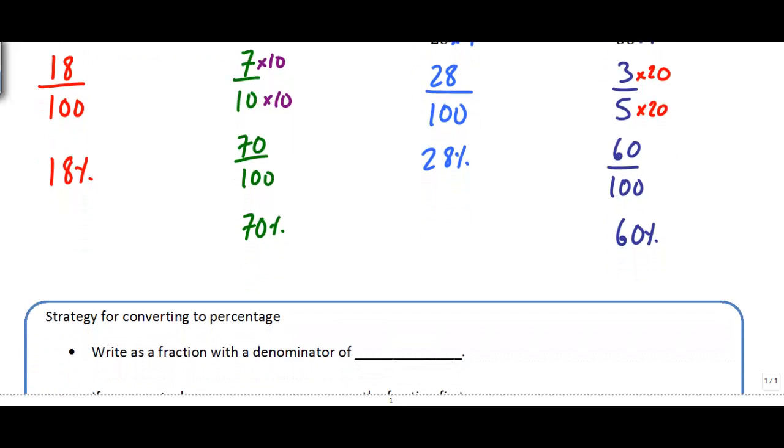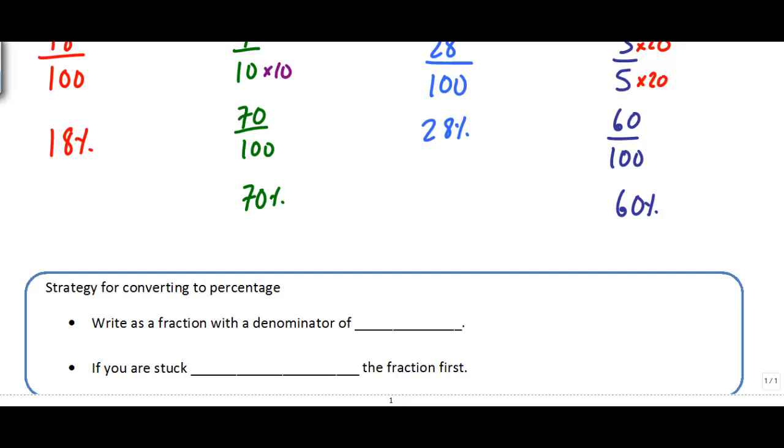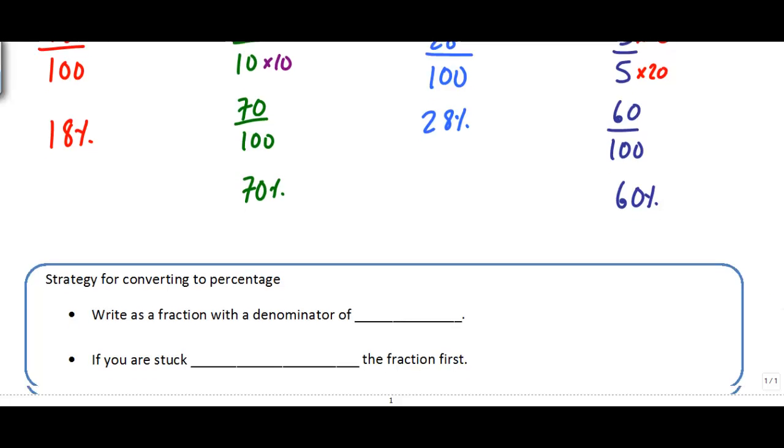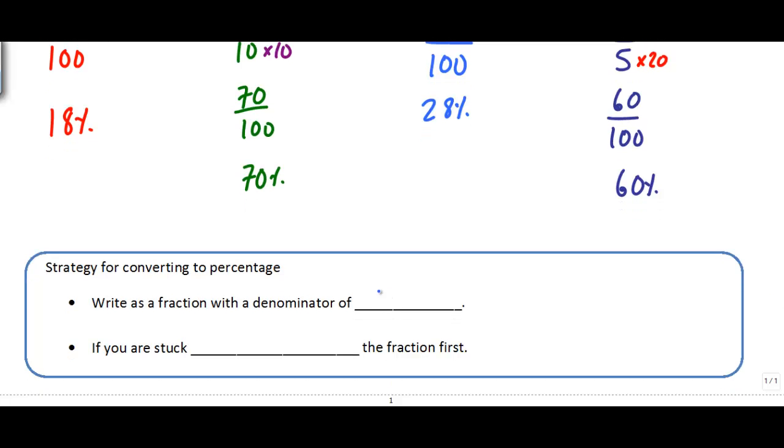When we're converting to a percentage, basically our goal is to try to write our number as a fraction with a denominator of 100. If we can get there, then we know that's our percentage. It's out of 100. If you're stuck, you want to simplify. Always try and simplify your fraction first. If that doesn't work, if you're still stuck, then you have to just go ahead and divide.